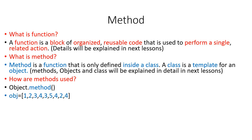For example, you have a list stored in an object called obj. To use a method, for example dot count, which counts a specific number in that object — if you want to count the number four in the list obj, type the variable name obj, then dot count, and in parentheses type the number you want to count.